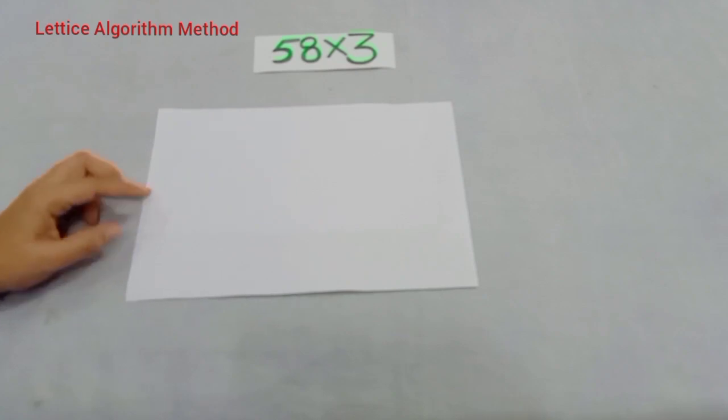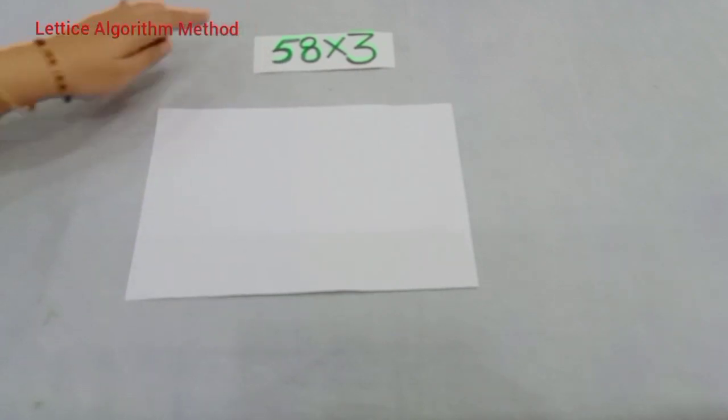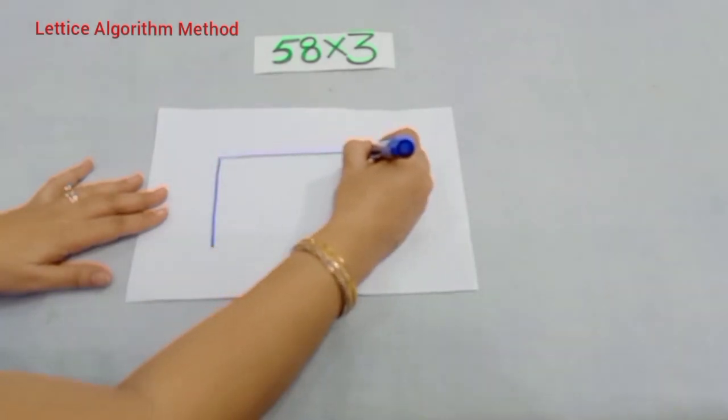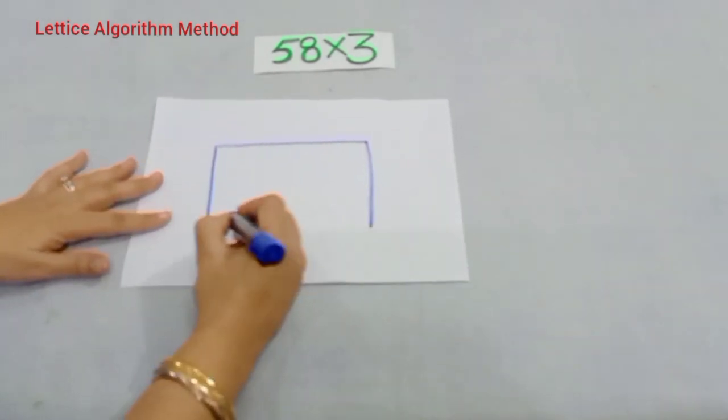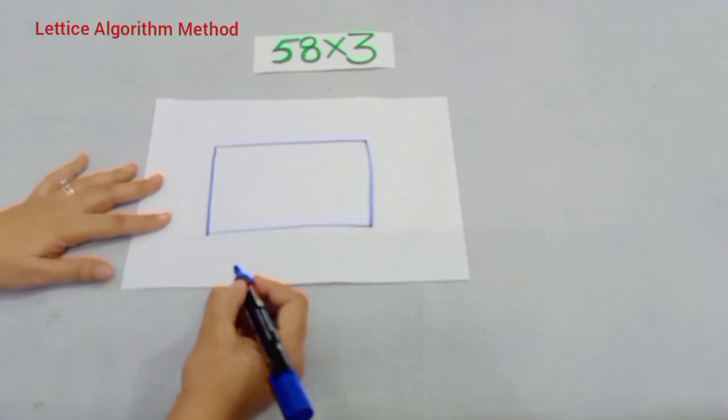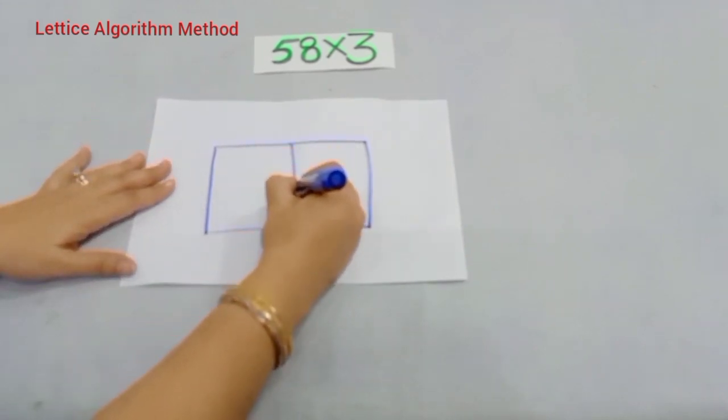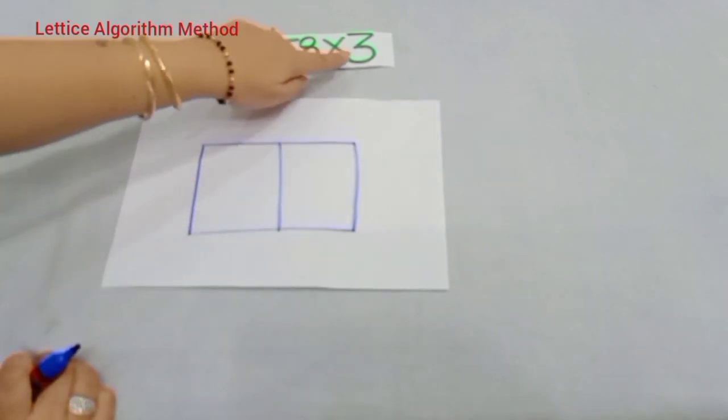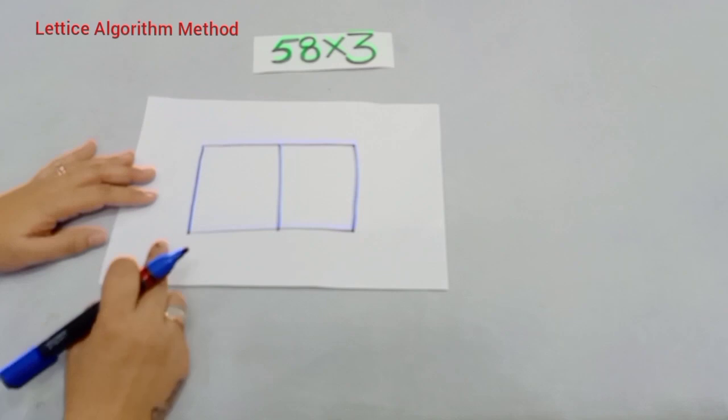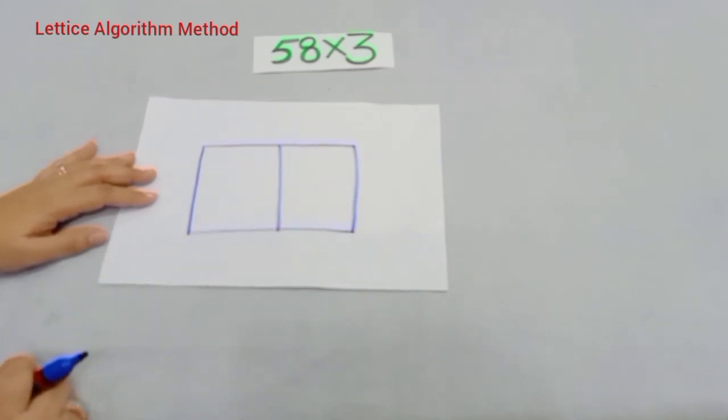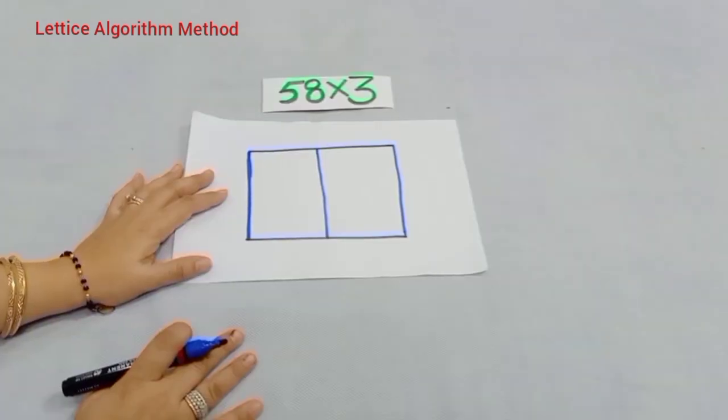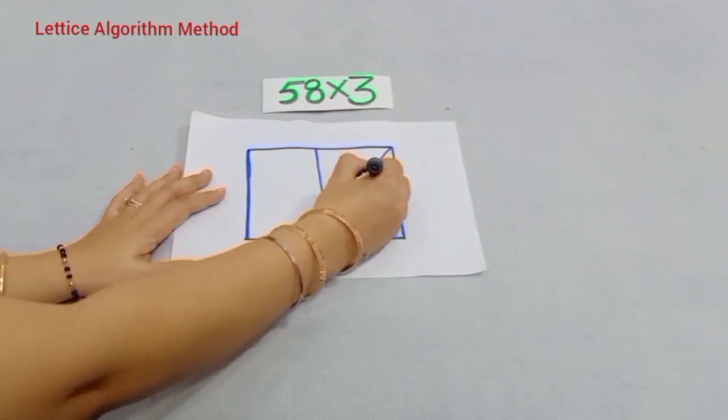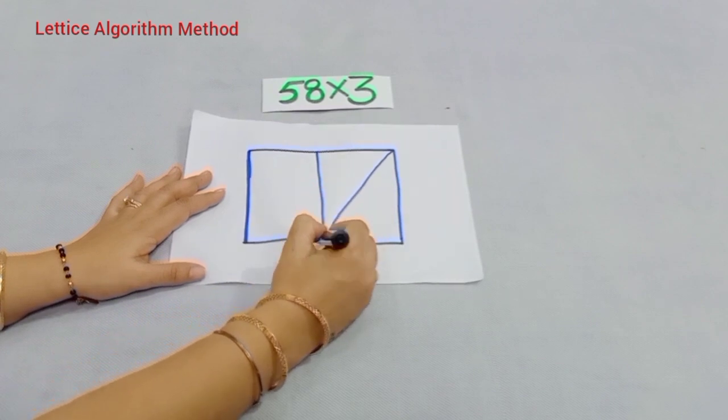Here we have firstly two digit number, so firstly we will draw columns, that is two columns. So we have drawn here two columns, one, two. Now we have another number, that is one digit number, so we have drawn only one row. Now, to do multiplication, you have to draw diagonals like this.